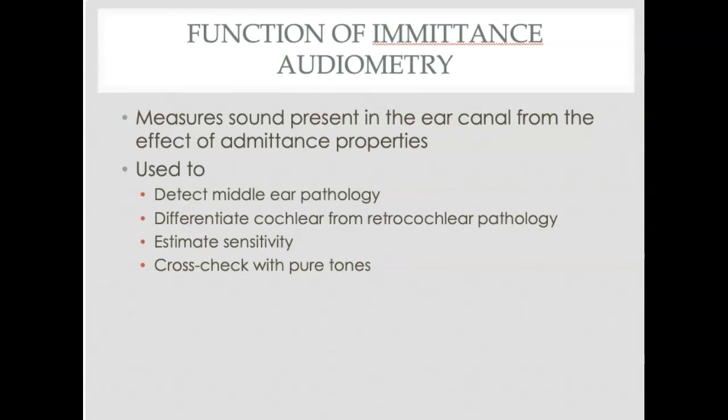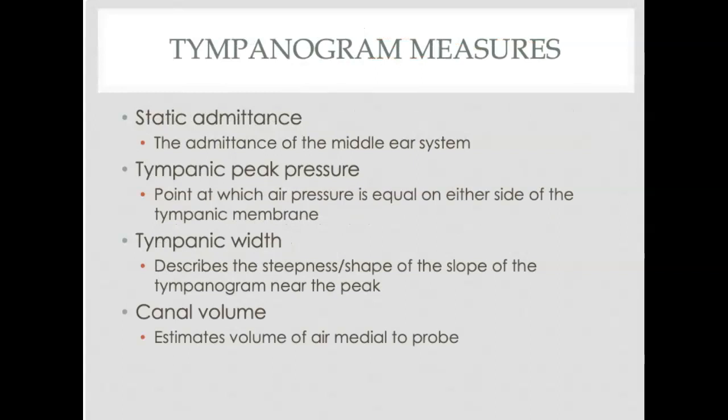Why do we use admittance audiometry? We use it to detect middle ear pathologies, differentiate cochlear losses from retrocochlear pathology in the cases of acoustic reflex. Not so often, but you can use it to estimate hearing sensitivity, and then we do it to cross-check and be sure that our pure tones are accurate.